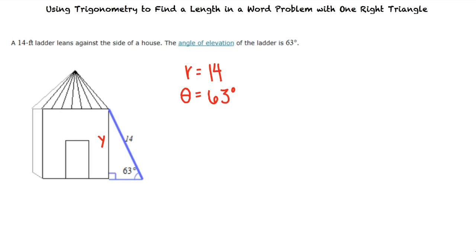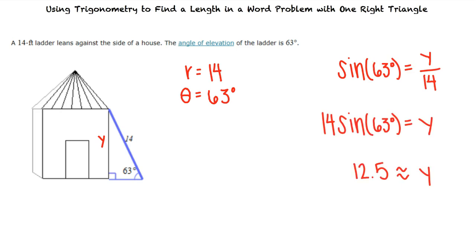We know that sine theta equals y over r. We can substitute in our known values and solve for y. Using our calculator, we see that the height from the top of the ladder to the ground is approximately 12.5 feet.